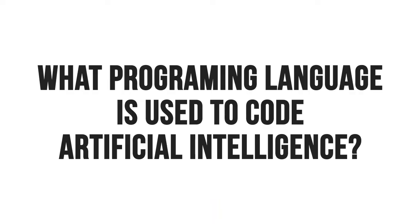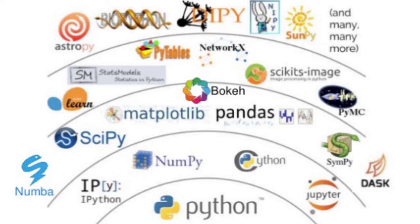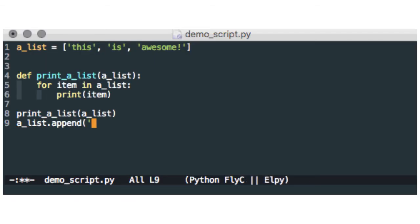What programming language is used to code artificial intelligence? Artificial intelligence can be programmed in any language. But the community has formed mainly around Python, which has cutting-edge libraries for artificial intelligence like TensorFlow, Keras, PyTorch, NumPy, Pandas, etc. And all the courses that you will find online will use Python. So if you are interested in AI, learn to code with Python.